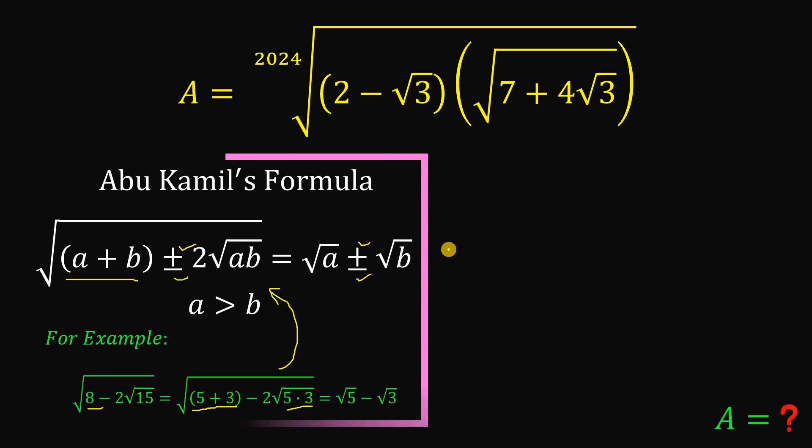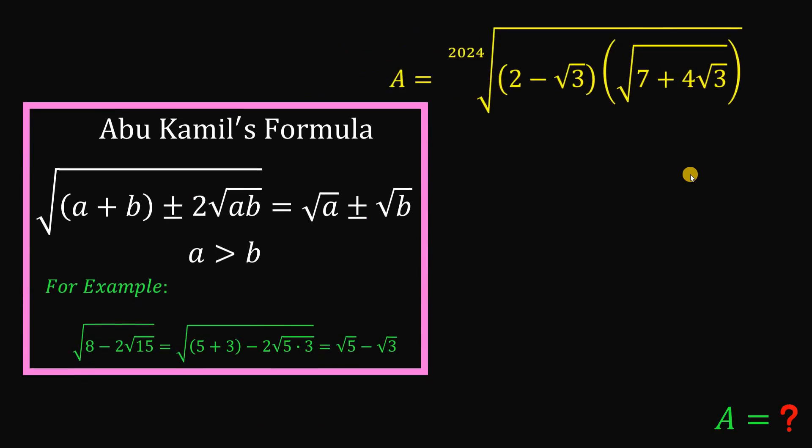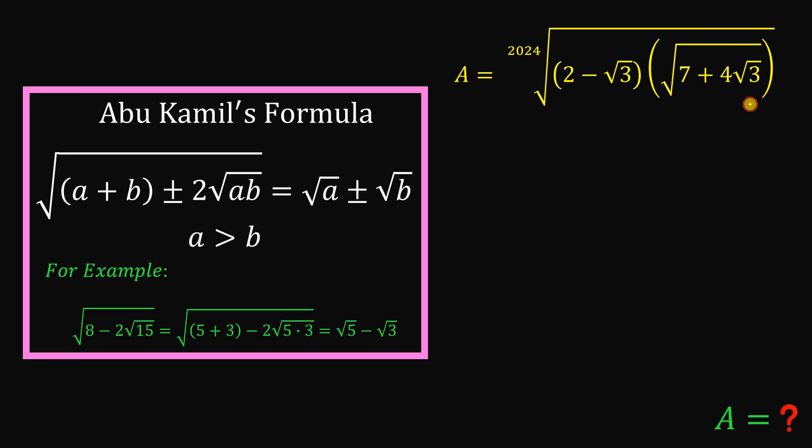So using this concept, we will answer this question. Alright, so first, let's get this expression square root of 7 plus 4 times root 3. Now take note, this number should be equivalent to 2. So let's break this 4 into 2 times 2.